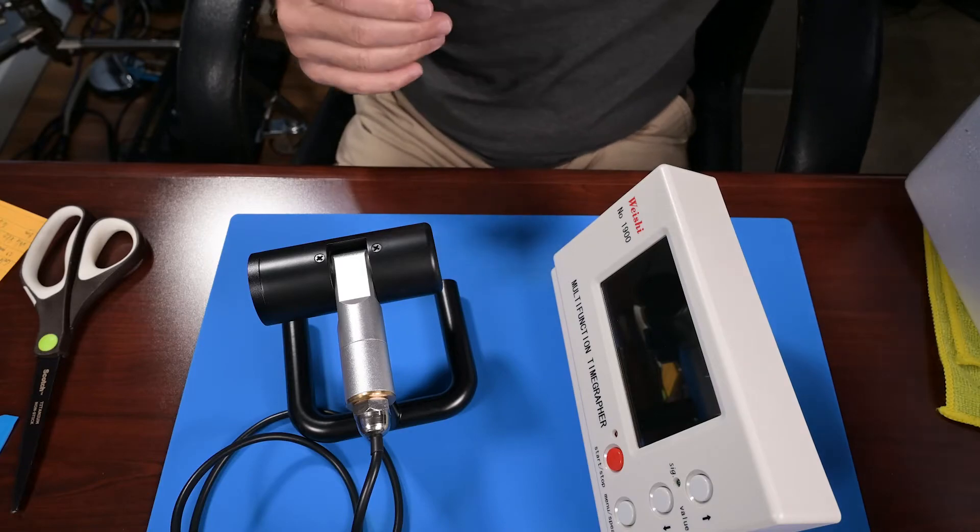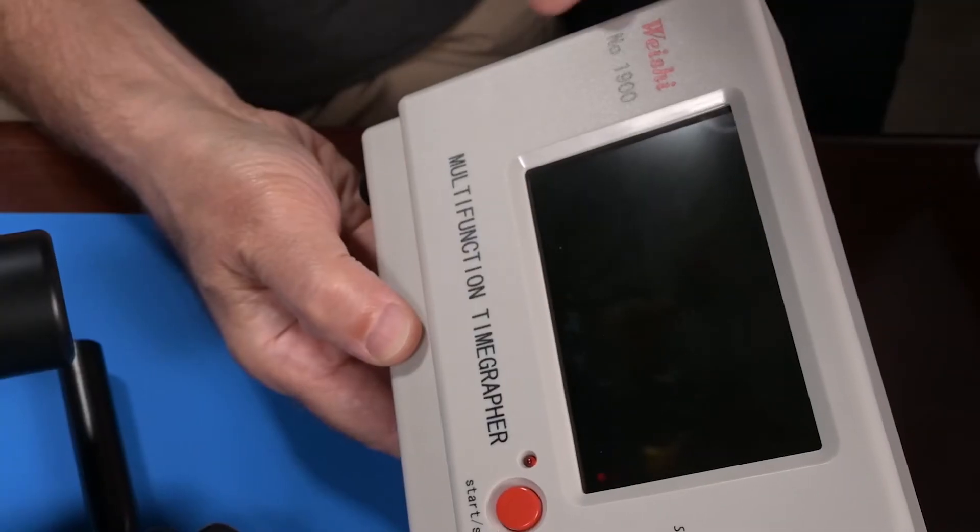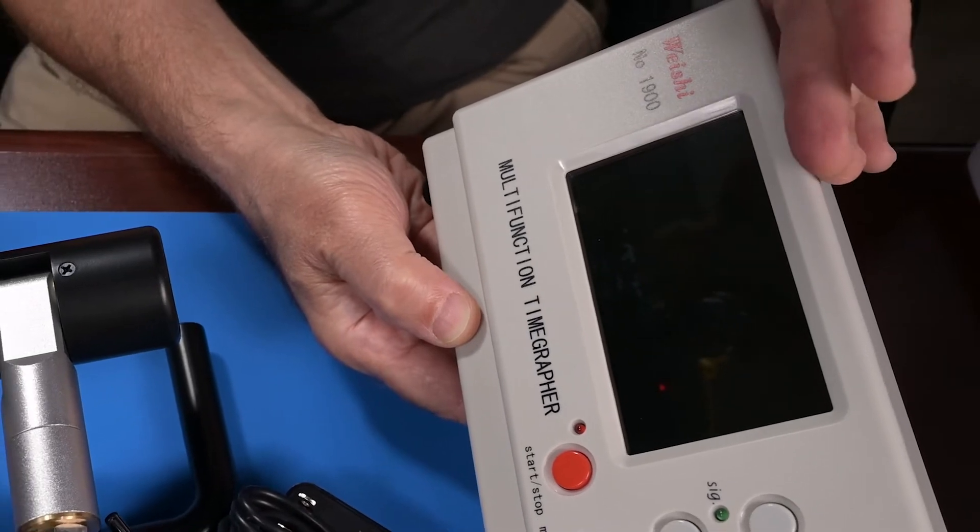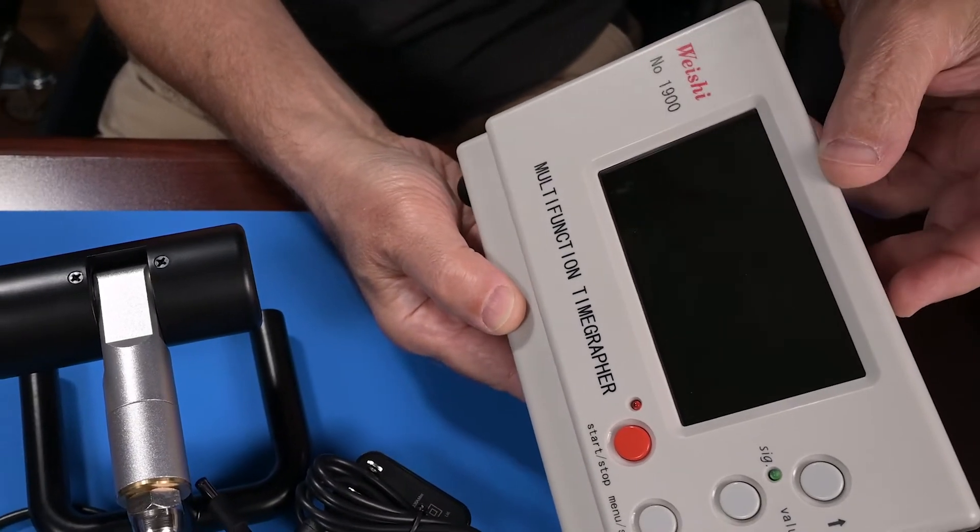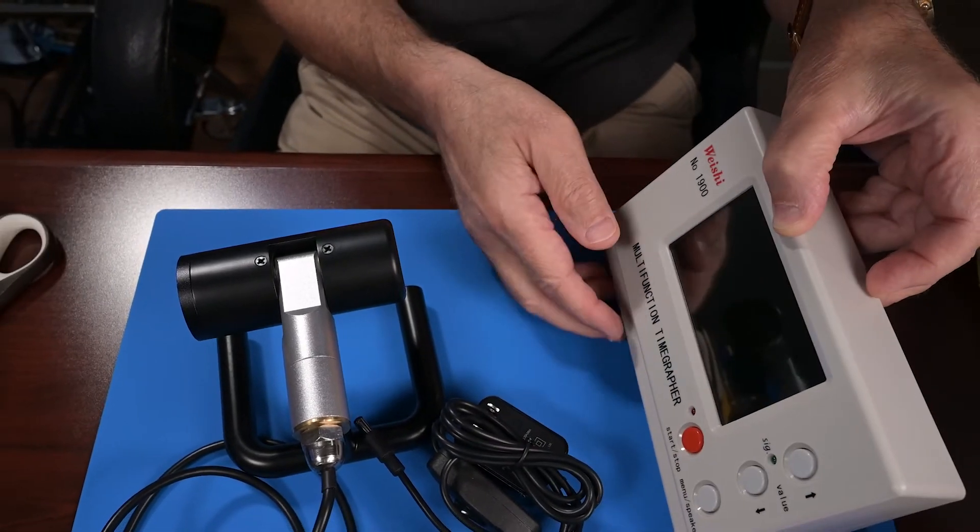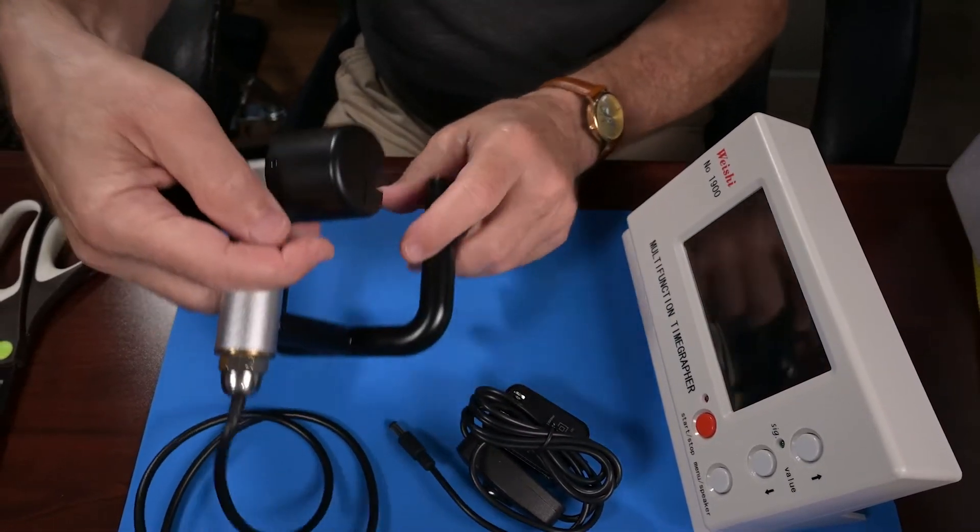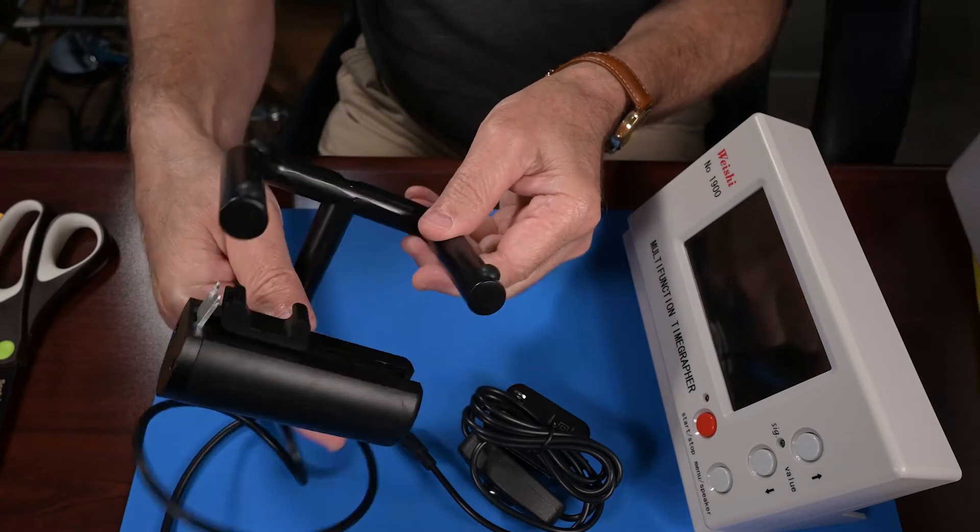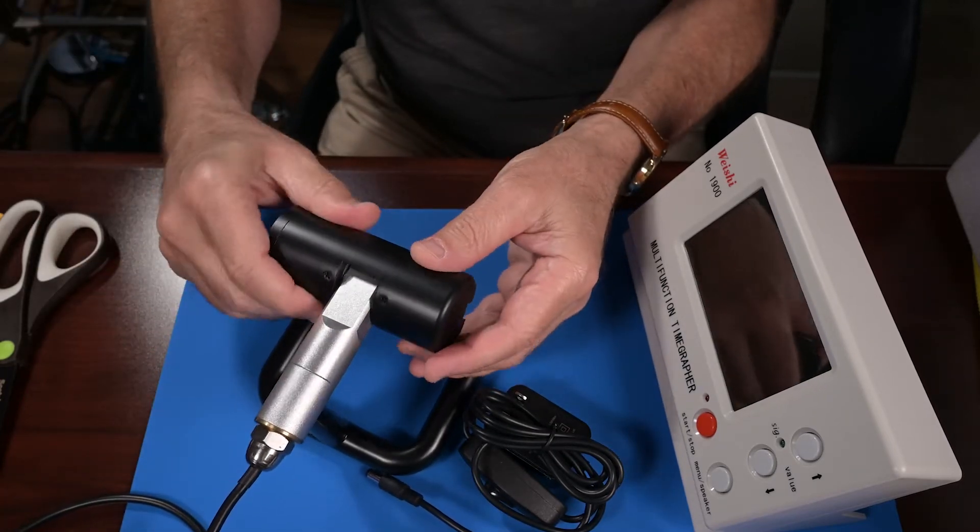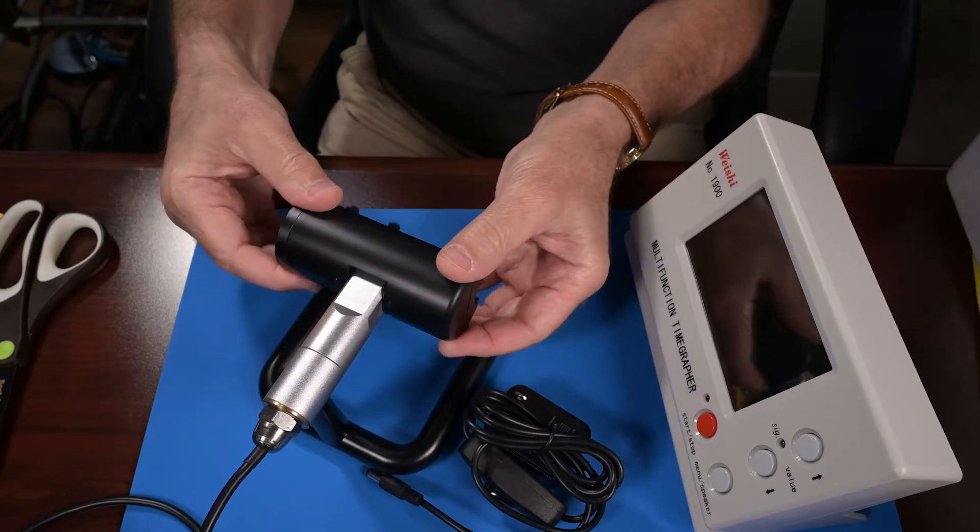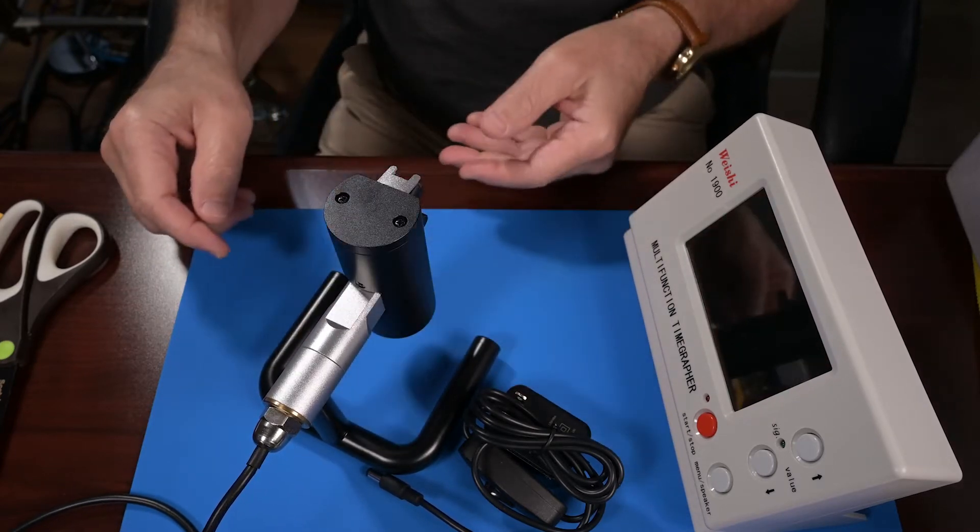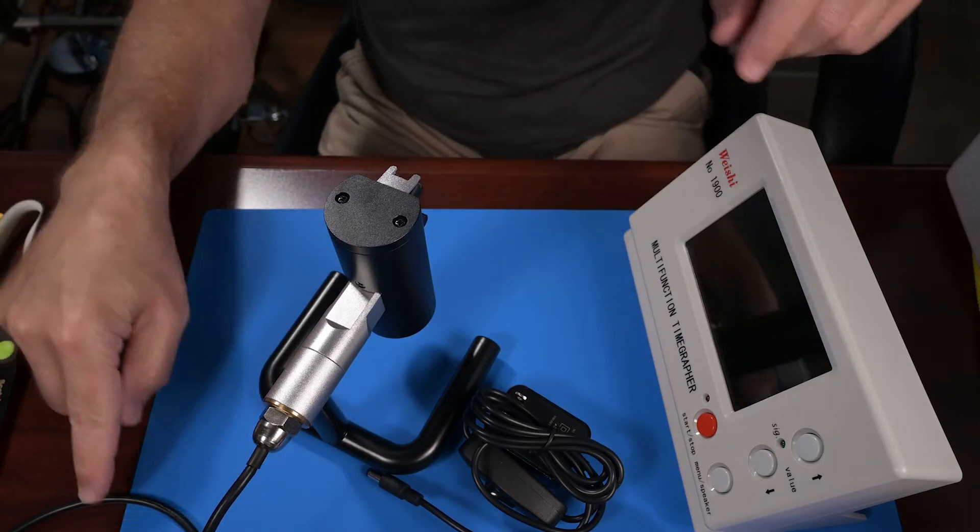This is the 1900 model. This gives you a full color display and very good sensitivity. This is the upgraded model, and this is the unit that you strap either the wristwatch onto or the wristwatch movement, and it has several different positions so you can see how that watch is running in the different positions.